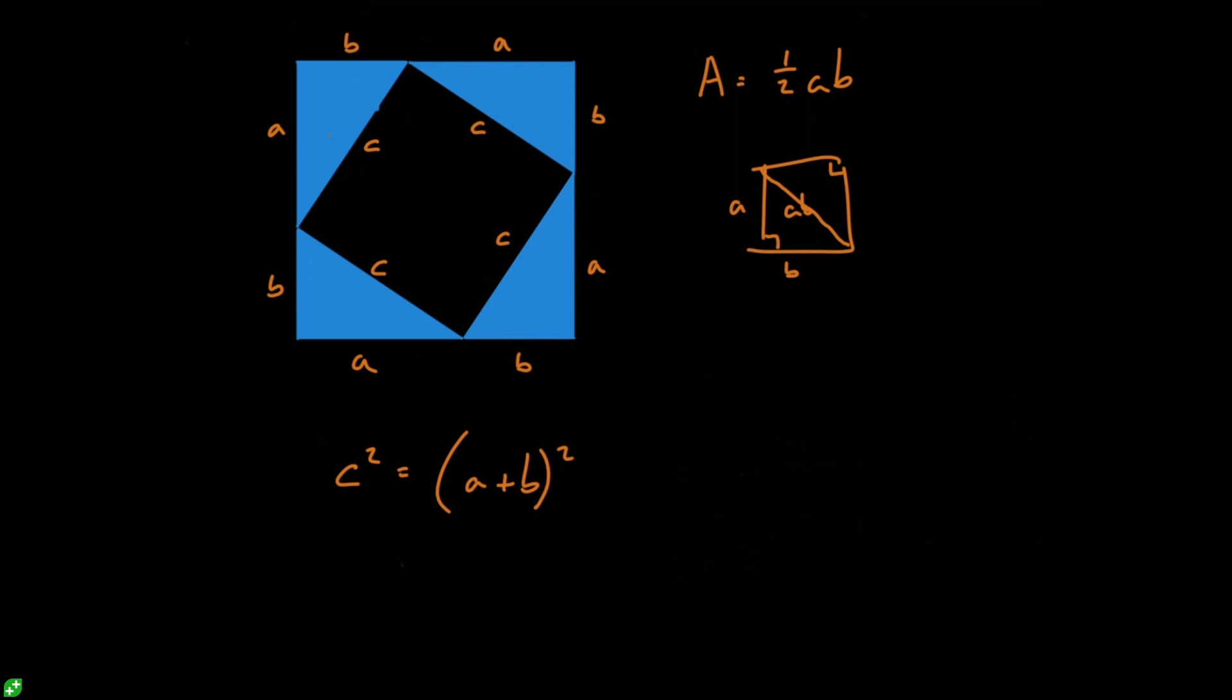So with that, we want to then take our big square and remove the four triangles. So we can subtract four times one half A, B. Now it's just a case of simplifying this equation. So pause the video now and work through that.